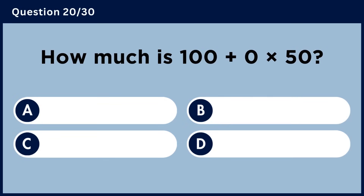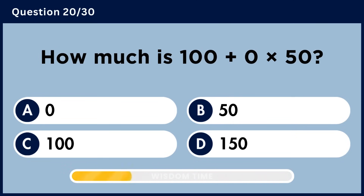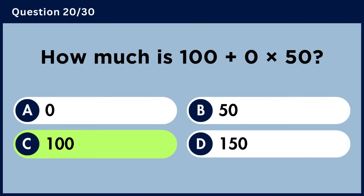How much is 100 plus 0 multiplied by 50? Answer C, 100.